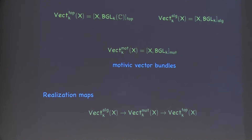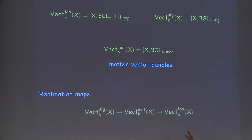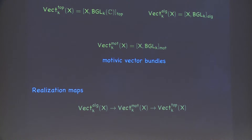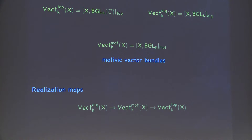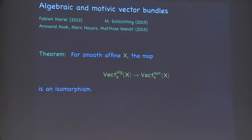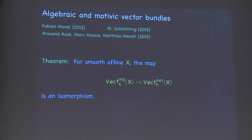We can abstractly define motivic vector bundles to be the set of maps in the motivic homotopy category from X to BGL_k. There are realization maps between those categories, giving a map from algebraic vector bundles to motivic vector bundles, and then to topological vector bundles. One can study the problem of giving a vector bundle on the analytic variety underlying a complex projective variety an algebraic structure by factoring it into two separate problems.